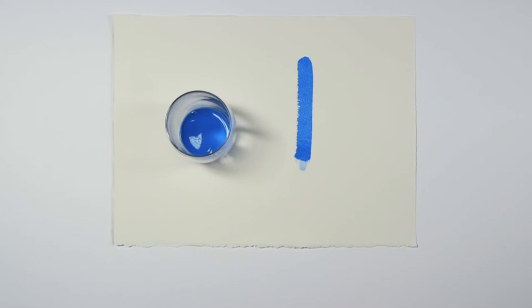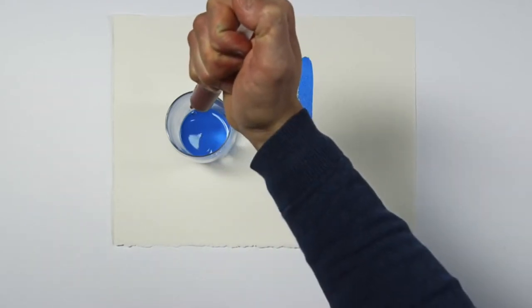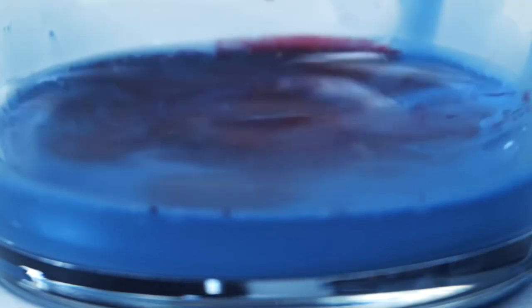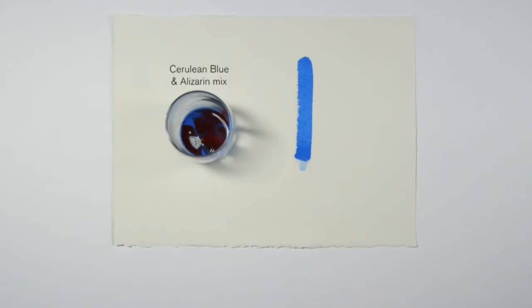The second wash is dominated by cerulean blue. It's a lovely granular color to use wet on wet. I've added some alizarin crimson to make it into a light purple, so roughly 80% cerulean and 20% alizarin.